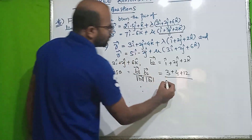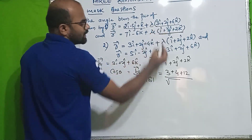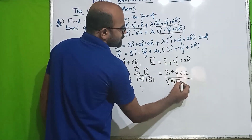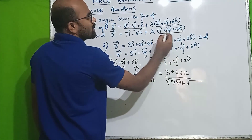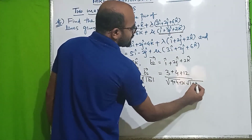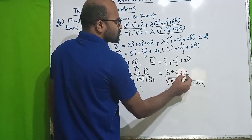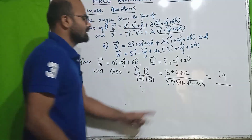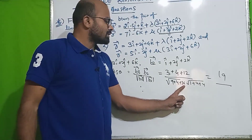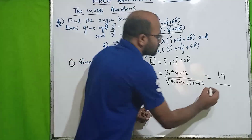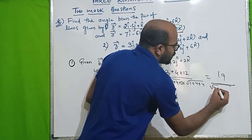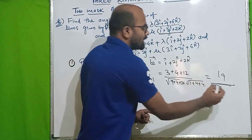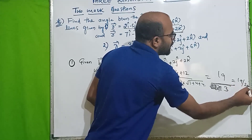Magnitude of b1: root of 3² + 2² + 6² = root of 9 + 4 + 36 = root of 49, which is 7. Magnitude of b2: root of 1 + 4 + 4 = root 9, that is 3. The numerator: 3 + 4 + 12 = 19. So cos θ = 19 divided by 7 into 3, that is 19 by 21.